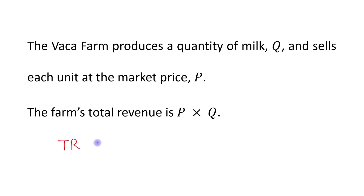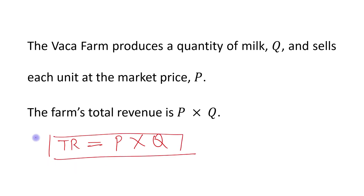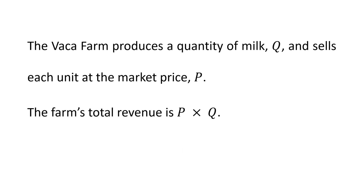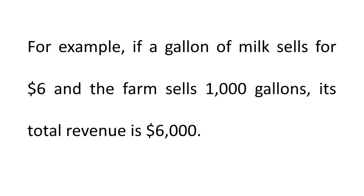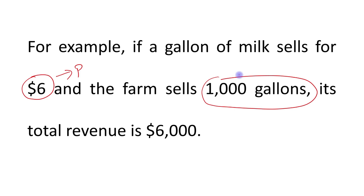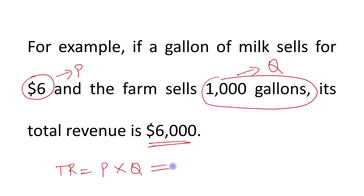So, what is the formula of total revenue? Total revenue is price per unit times the quantity of output. For example, if a gallon of milk sells for $6 — this will be the price P — and the farm sells 1000 gallons, that is the quantity. So, its total revenue will be $6000. TR is price times quantity: $6 times 1000, which is equal to $6000.